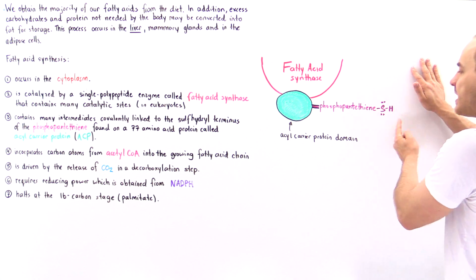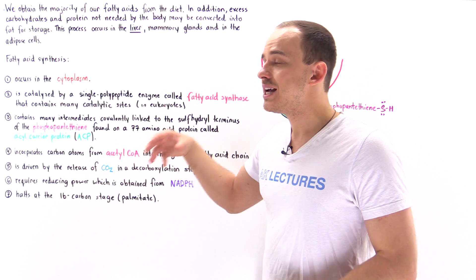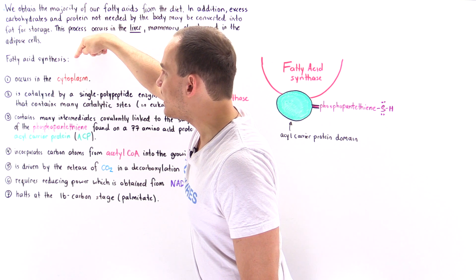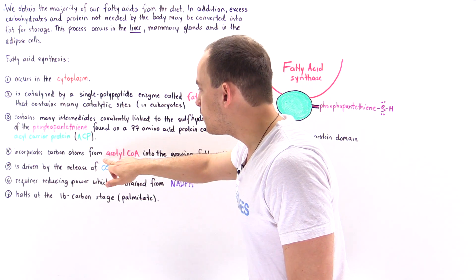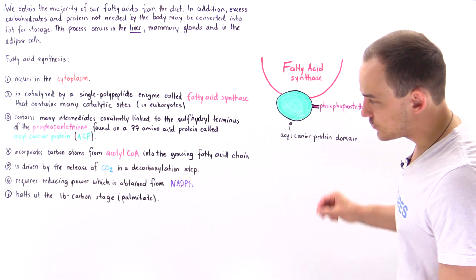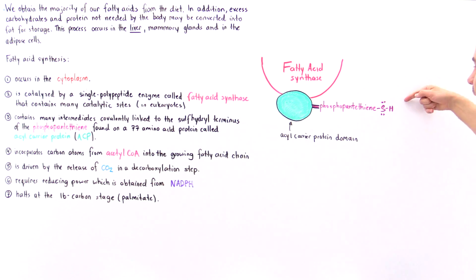Now on the tip of this phosphopantethine is a sulfhydryl group. And attached onto this sulfhydryl group is the next acetyl coenzyme A molecule that will be used to actually elongate that fatty acid chain. So we see that fatty acid synthesis incorporates carbon atoms from acetyl coenzyme A molecules onto that growing fatty acid chain. And as we'll see in more detail, those acetyl coenzyme A molecules are attached onto this sulfhydryl group.